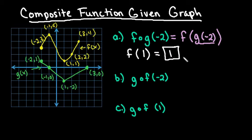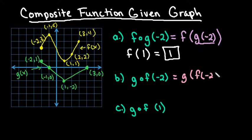So f of g of negative 2 is 1 because when I find g of negative 2, that gives me an output of 1. Then I go to my f equation, look for the x-coordinate of 1, and find my output. For the second one, we're going to find g of f of negative 2.